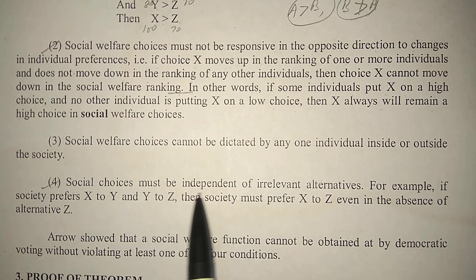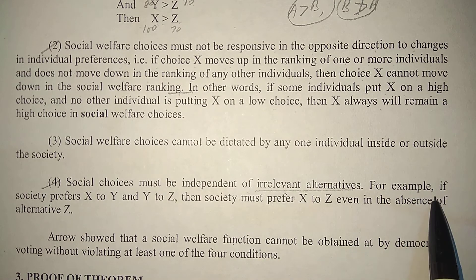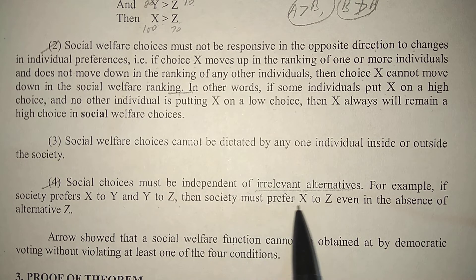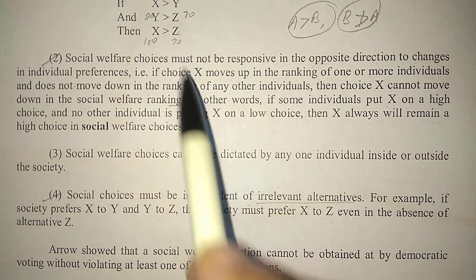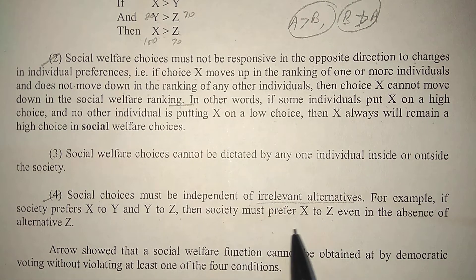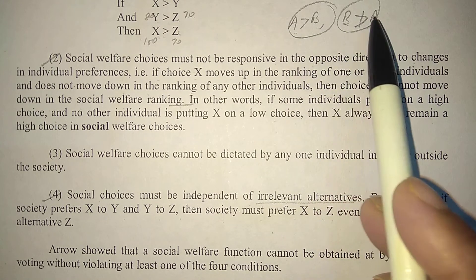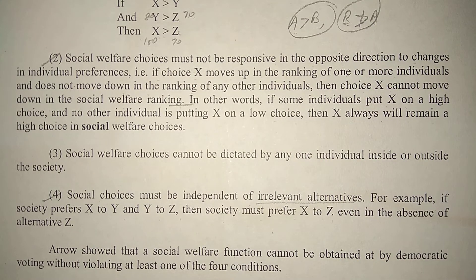Social choices must be independent of irrelevant alternatives. For example, if society prefers X to Y and Y to Z, then society must prefer X to Z. This is similar to the first assumption — if one thing is greater than another, the other cannot be greater in return. Both consistency and transitivity are present in this condition.